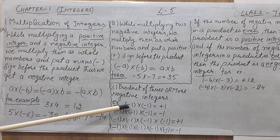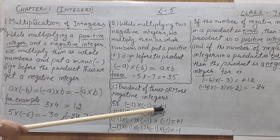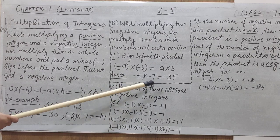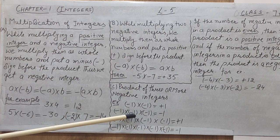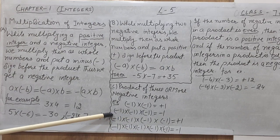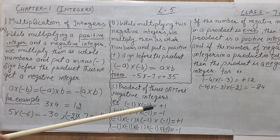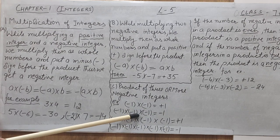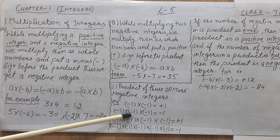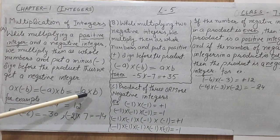Now, looking at the sign pattern: when we multiply two negative integers, the result is positive. But when we multiply three negative integers — minus 1, minus 1, minus 1 — the result is negative. This is because: two negatives give a positive sign, and then that positive sign multiplied by the remaining negative sign gives a negative sign.